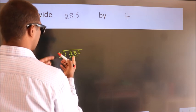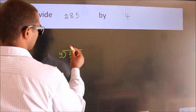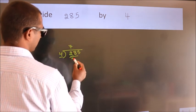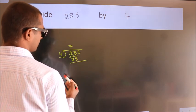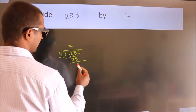When do we get 28? In the 4 table. 4 times 7 is 28. Now we should subtract. We get 0.